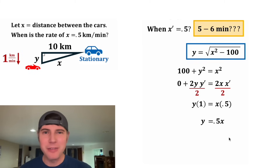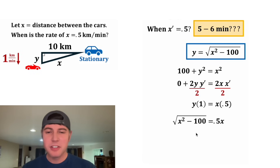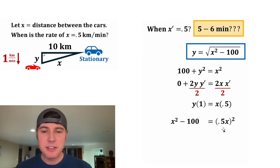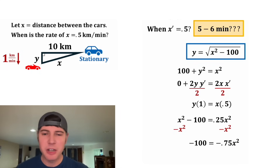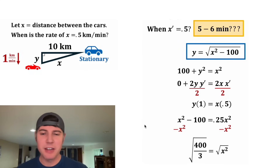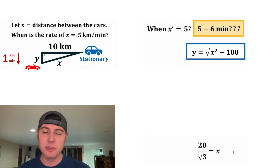Now we have y equals 0.5x. And since y equals the square root of x squared minus 100, we substitute that in for y. To get rid of the square root, we square both sides: the left-hand side gives x squared minus 100, and the right-hand side gives 0.5 squared times x squared, where 0.5 squared equals 0.25. So we have x squared minus 100 equals 0.25x squared. Subtracting x squared from both sides gives negative 100 equals negative 0.75x squared. Dividing both sides by negative 0.75, we get x squared equals 400 over 3. Taking the square root of both sides, where the square root of 400 is 20, gives x equals 20 over root 3.